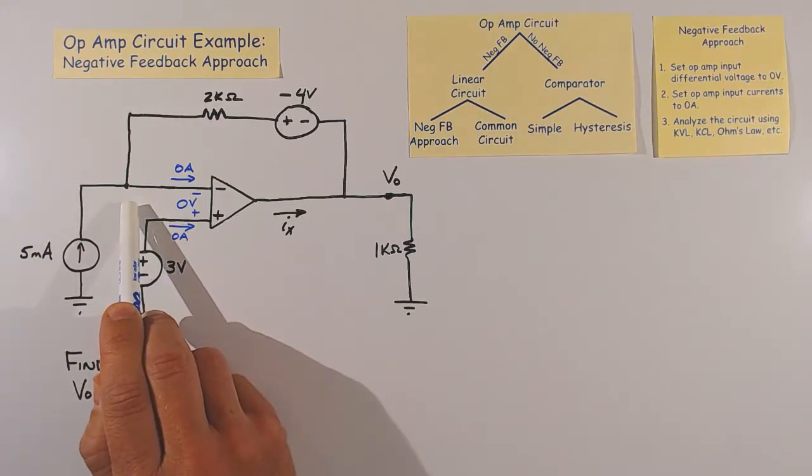Looking at the inverting input node, we have 5 milliamps coming in from the current source, and 0 current going into the inverting input of the op-amp.